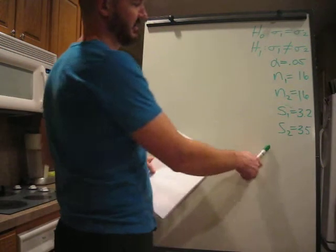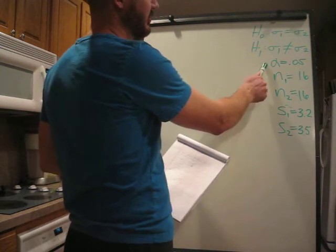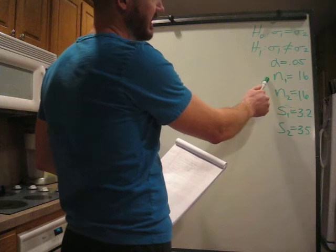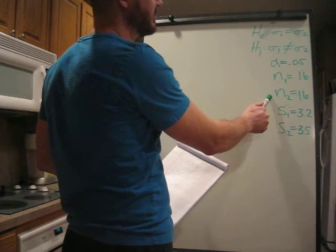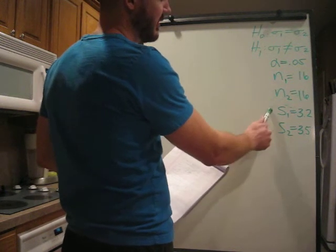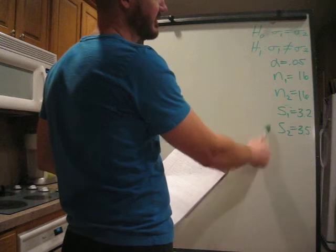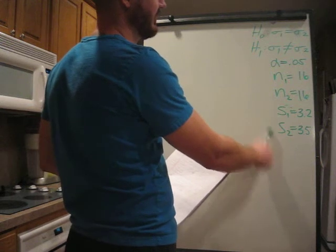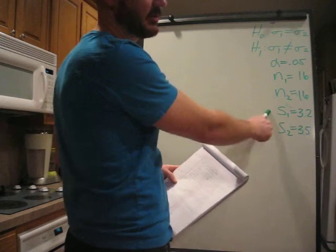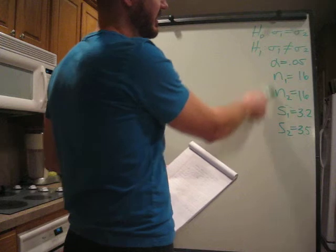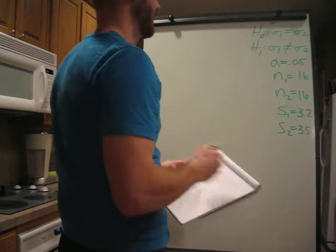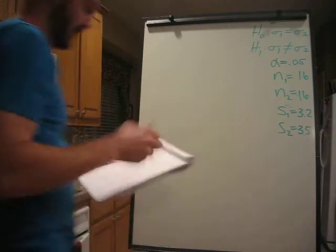This is the information given out of the book. Alpha level 0.05. N sub 1, 16. N sub 2, 16. S sub 1, 3.2. S sub 2, 3.5. Remember, S sub 1 and 2 are sample standard deviations. And N's are the sample size.